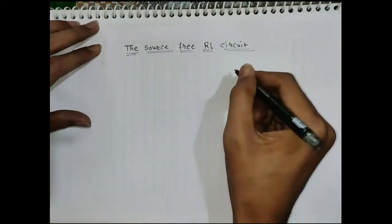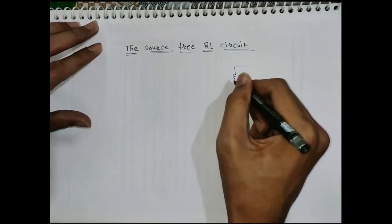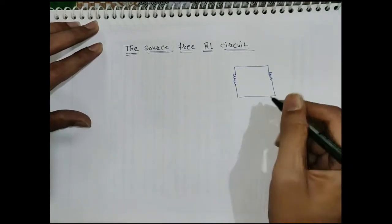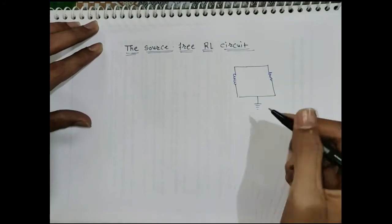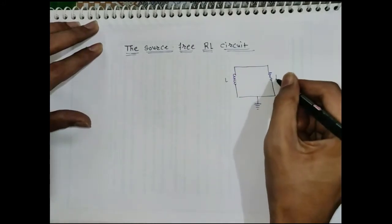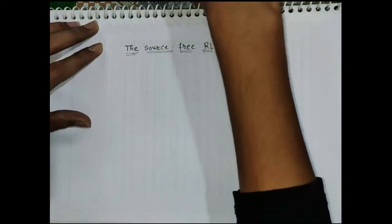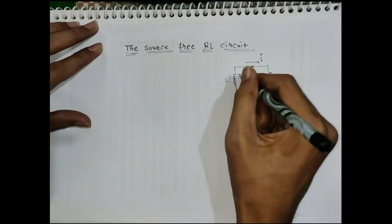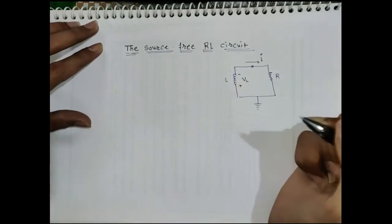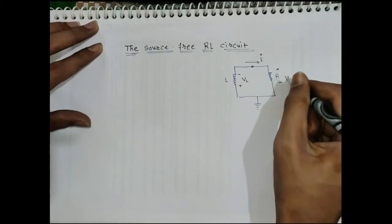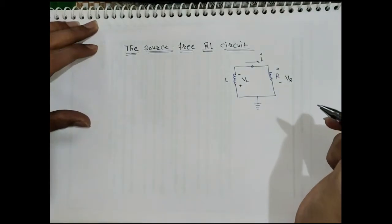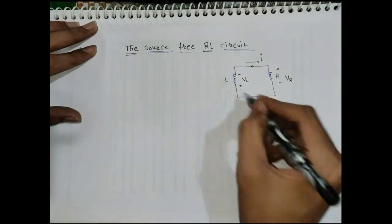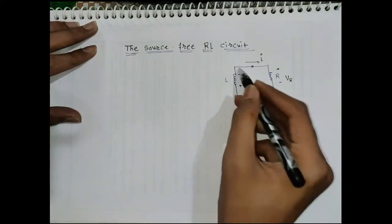A series connection of a resistor and inductor is given as shown, where the inductor L and resistor R are connected. The current flowing is I, the voltage across the inductor is V_L, and the voltage across the resistor is V_R. Our goal is to determine the response of the circuit, which is nothing but the current through the inductor.